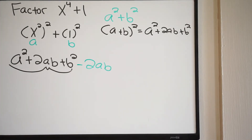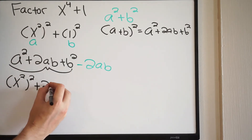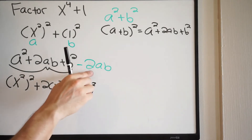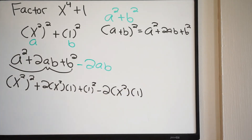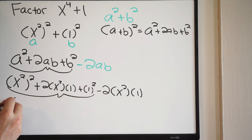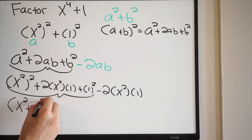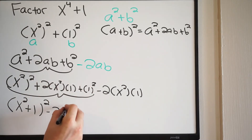Now I'm going to replace my variables with what we actually have. We have x squared (that's a) squared, plus 2 times x squared times 1, plus 1 squared — and then minus 2 times x squared times 1. Now I have my first three terms that I can factor. Those first three terms factor as (x squared plus 1) squared, and then we have minus 2x squared at the end.